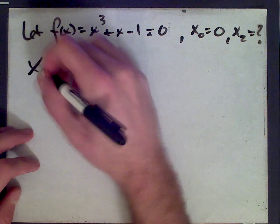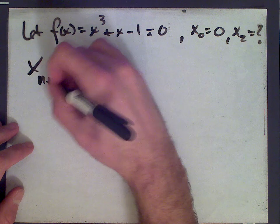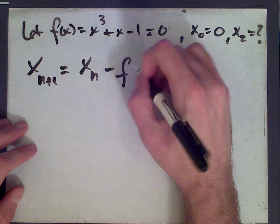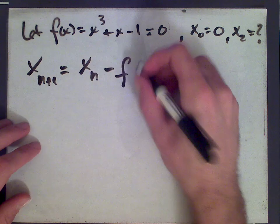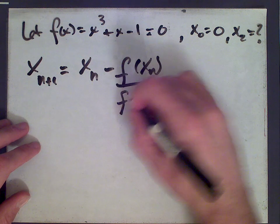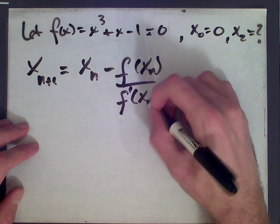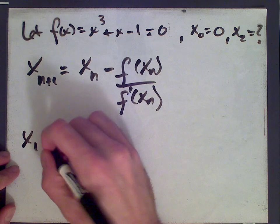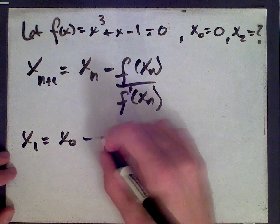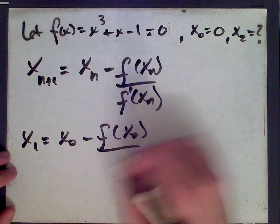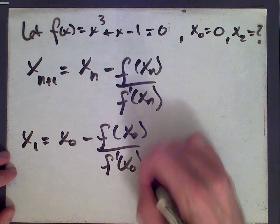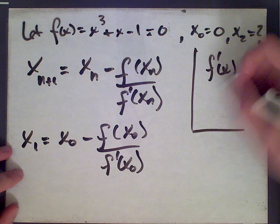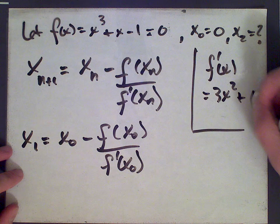So Newton's method says that x n plus one equals x n minus f of x n divided by f prime of x n. Which means x one we get by plugging in n equals zero: x zero minus f of x zero divided by f prime of x zero. And for all of this we're going to need the derivative, so we get f prime of x is three x squared plus one.